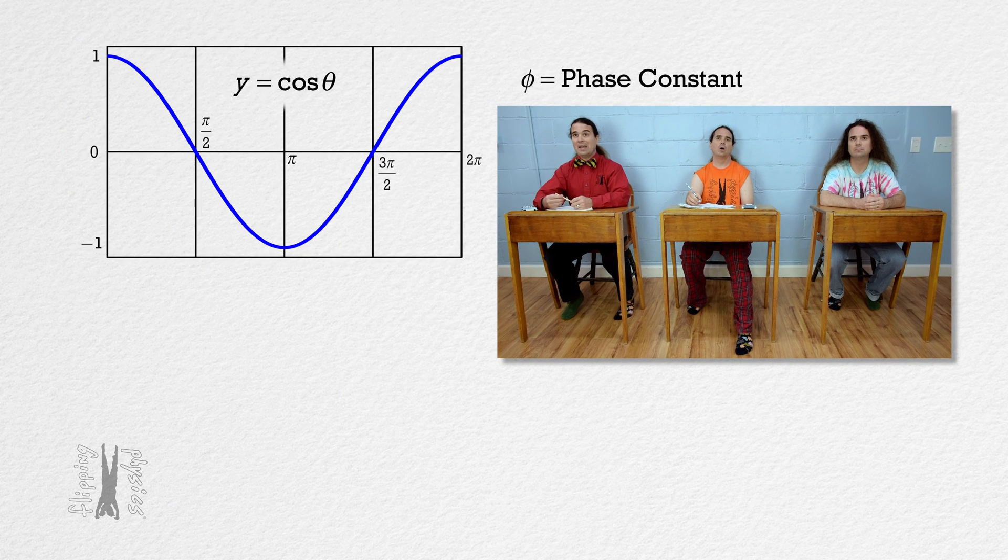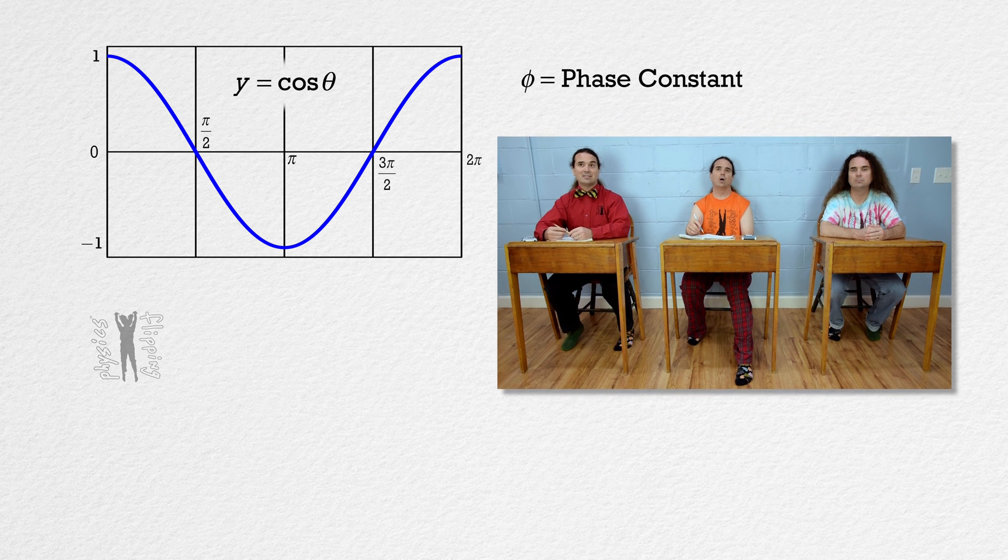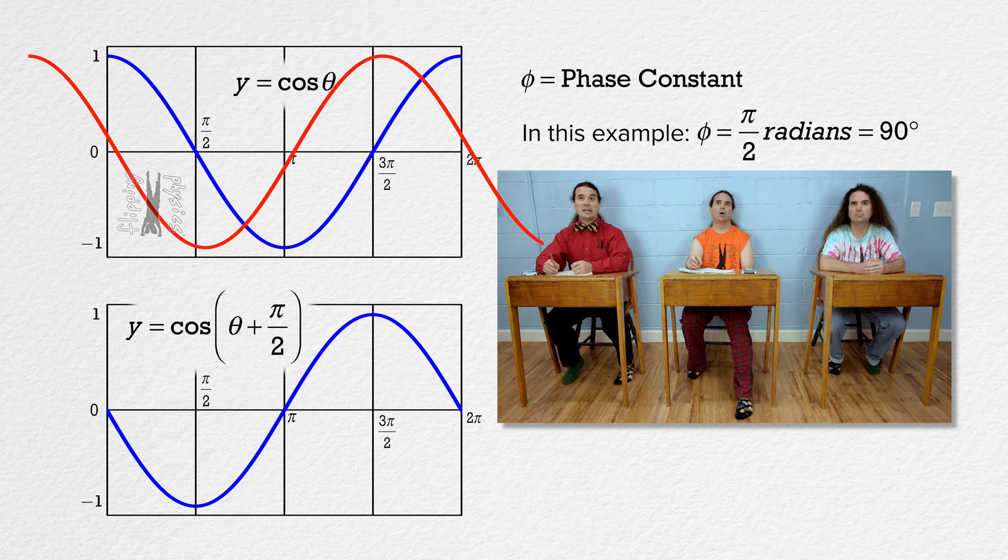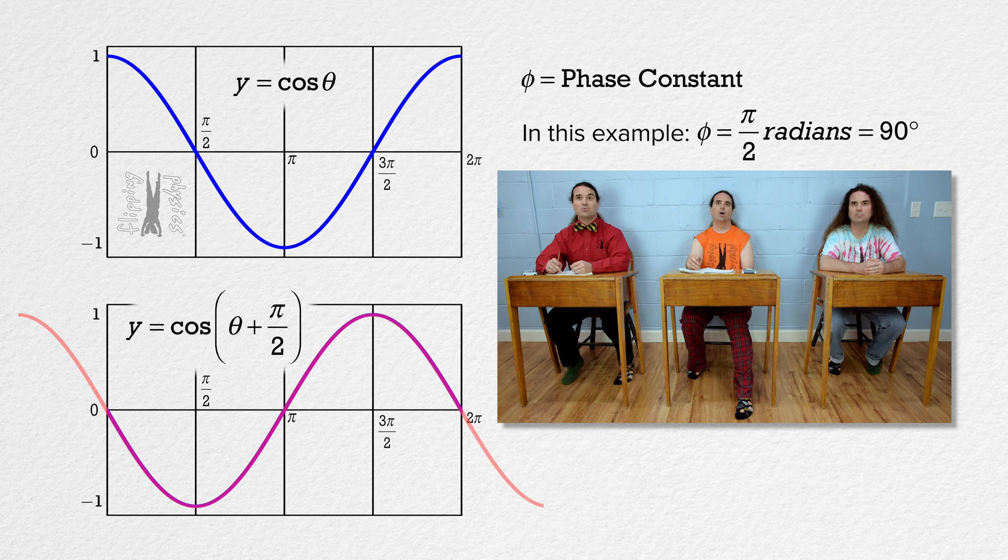we can look at the graph of y equals cosine theta with theta in radians, and compare that to the graph of y equals the cosine of the quantity theta plus a phase constant of pi over 2 radians. You can see that the cosine graph is phase shifted to the left by pi over 2 radians, which is also 90 degrees. That is what the phase constant does.